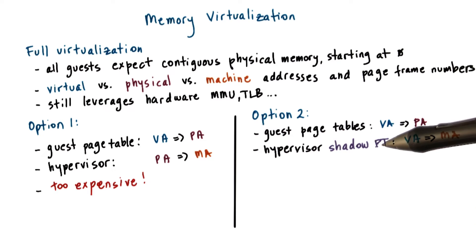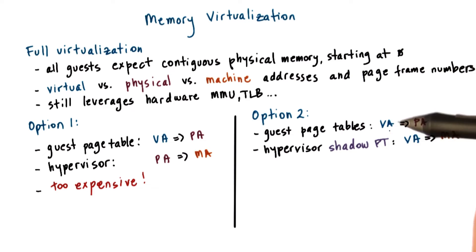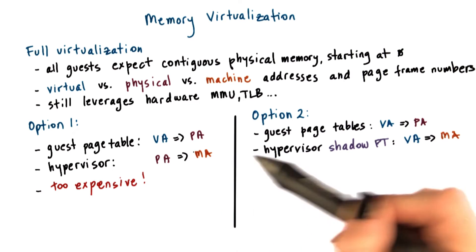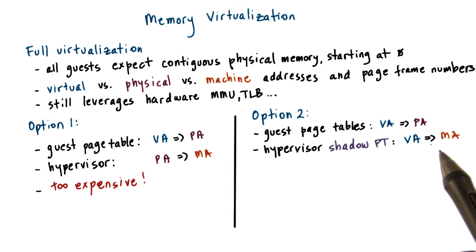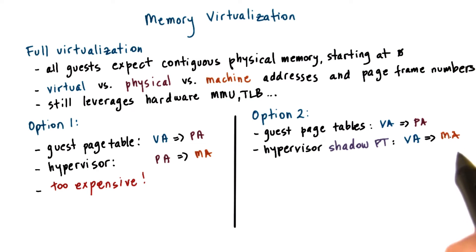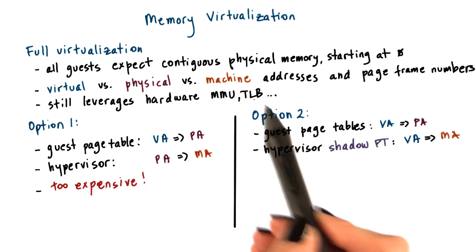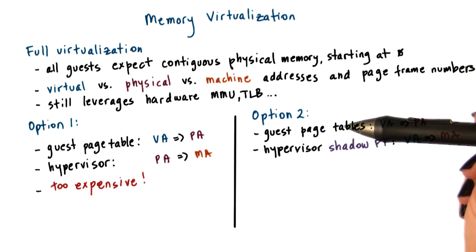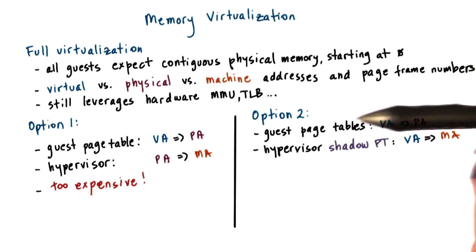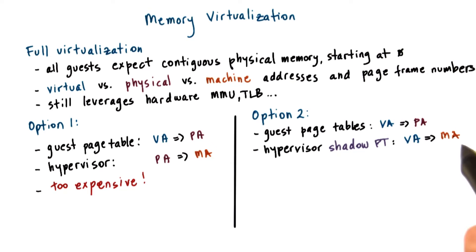The second option is for the hypervisor to maintain a shadow page table, in which it looks at what virtual addresses the guest has mapped to physical addresses, and then in the shadow page table it directly establishes a mapping between the virtual addresses used by the guest and the machine addresses used by the physical hardware. Then if the hardware MMU uses this page table, the guest operating system is allowed to execute natively — applications will use virtual addresses, and these will directly be translated to the machine addresses used by the physical hardware.